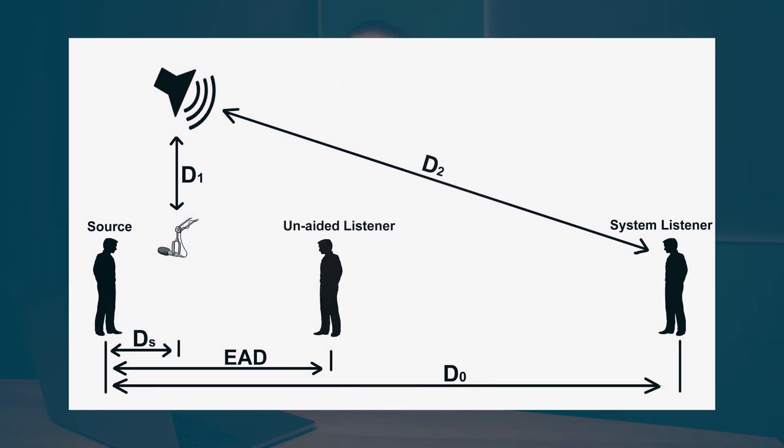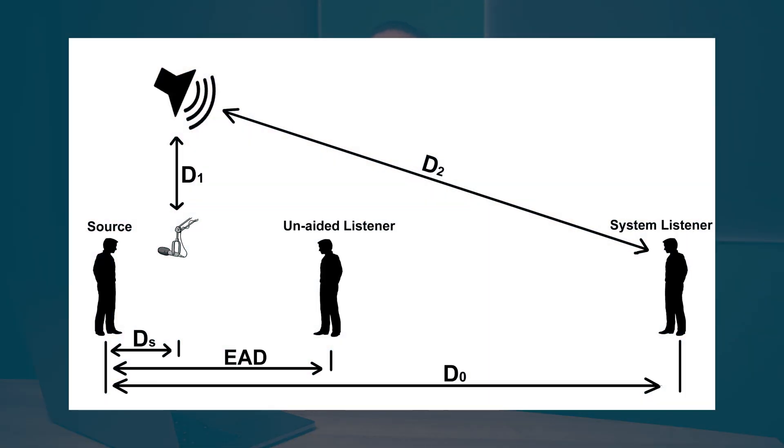Here at Audio Logic, we deal with these techniques to help our customers design systems that are appropriate for their applications. Now that we know the primary difference between voice lift and sound reinforcement, it's time to understand whether your room is eligible for a voice lift system or not. The best way to calculate this is by using Potential Acoustic Gain and Needed Acoustic Gain, most commonly known as PAG and NAG.